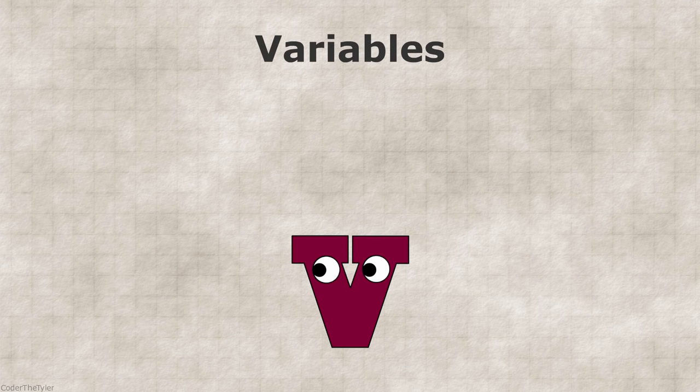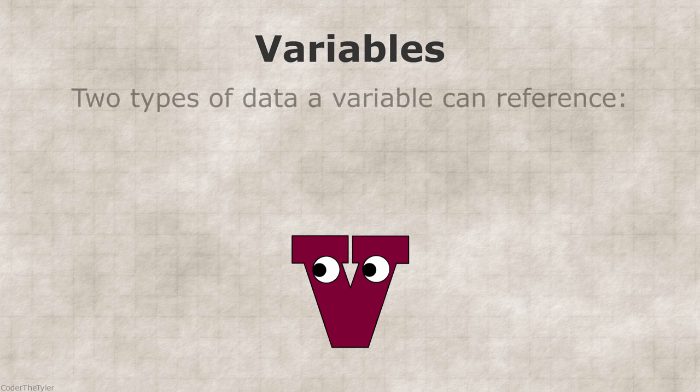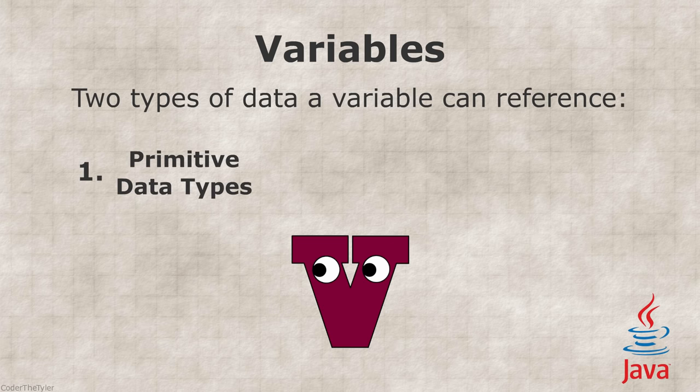In fact, variables is sort of an unfair generalization to make. In reality, there are two types of data stored in variables in Java: data types and objects.